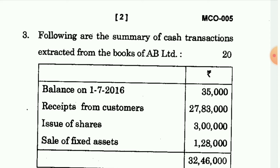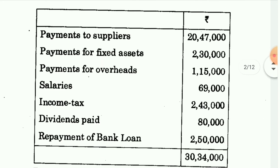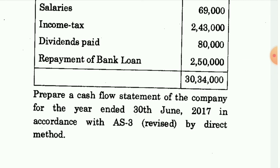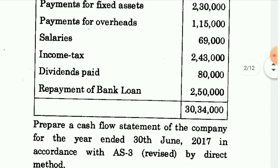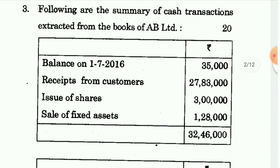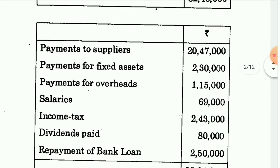Next question: The following are the summary of cash transactions from the books of AB Limited. Cash transactions given हैं — payment to supplier, payment of salary, income tax, dividend paid, repayment of bank loan — तो यहाँ पर cash flow statement बनानी है। बहुत easy question है। अगर आप लोग इस question की video चाहते हैं तो comment section में बताना।